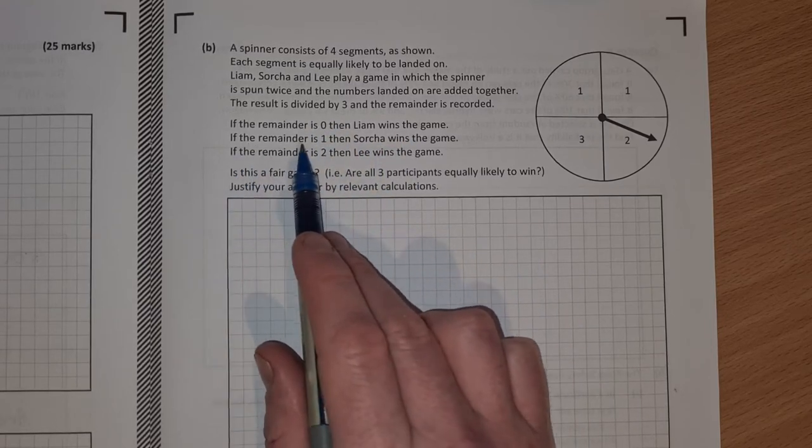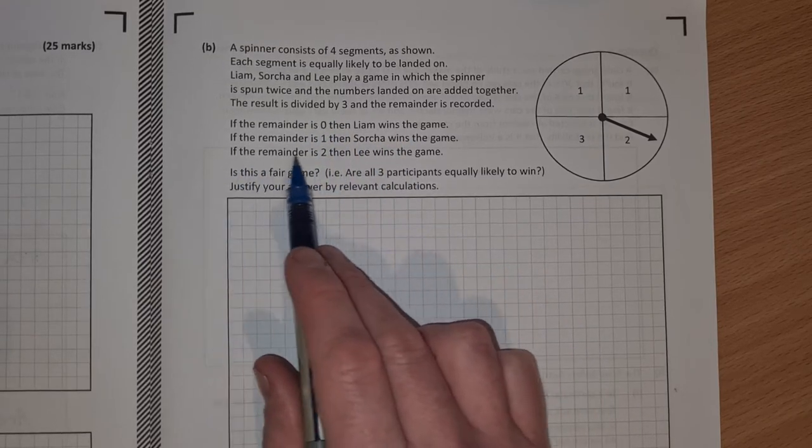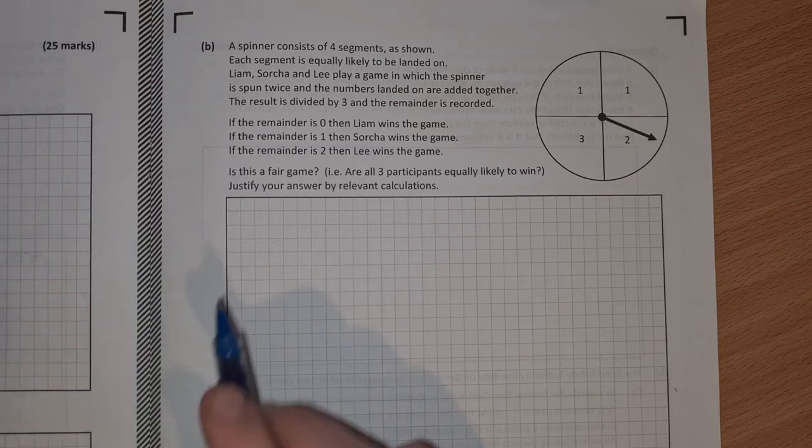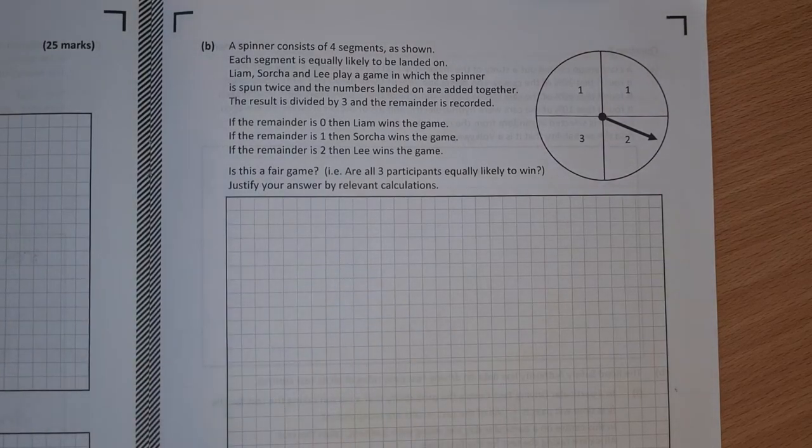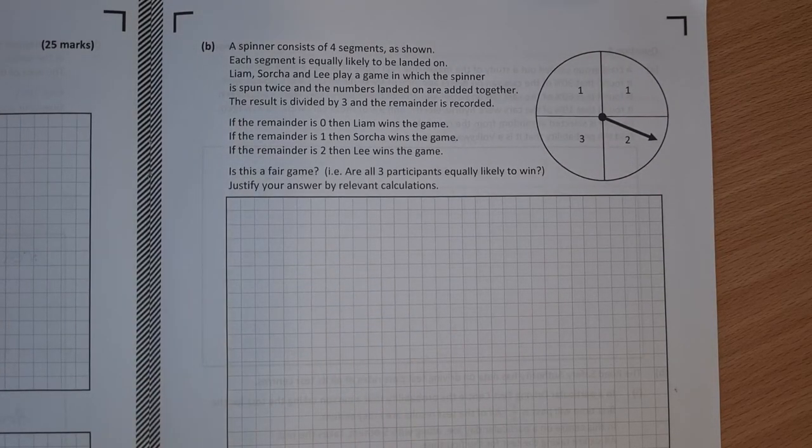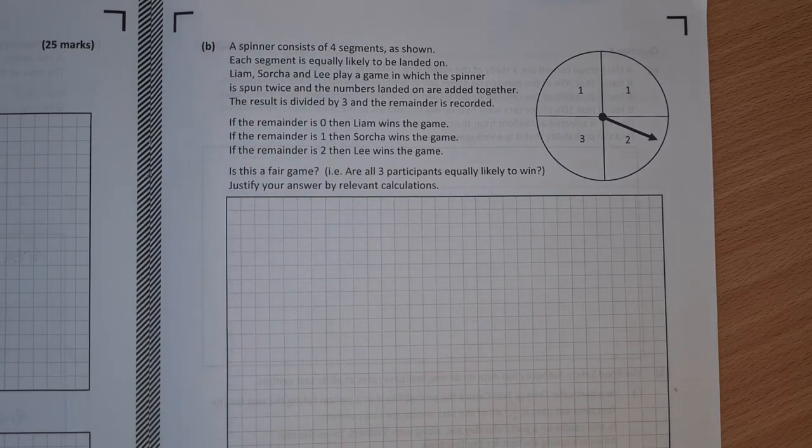The result is then divided by 3 and the remainder is recorded. If the remainder is 0, Liam wins, if the remainder is 1, Circa wins and if the remainder is 2, Lee wins. Is the game fair? Are all three participants equally likely to win and justify your answer with relevant calculations?